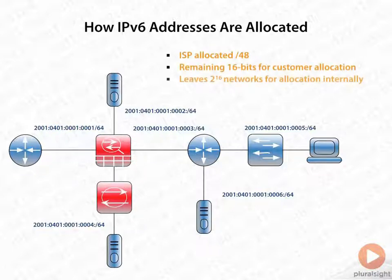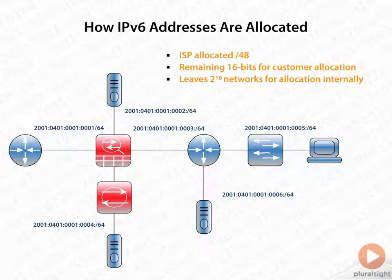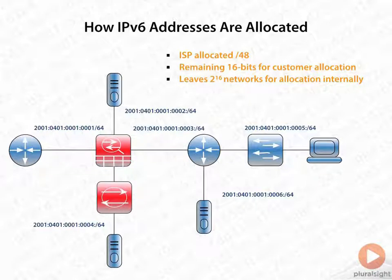So the allocation came from a service provider who gave us a /48. The remaining 16 bits leaves us 2 to the 16th power — quite a few addresses available for internal allocation. That's something like 65,000 networks that we can allocate internally.